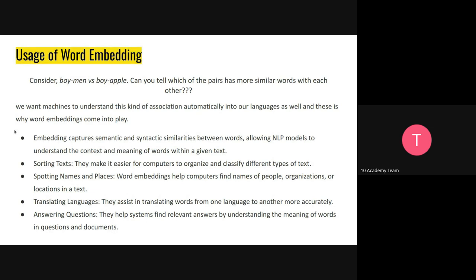Embeddings allow NLP models to understand the context and meaning of words within text. Other uses of embedding include: sorting text — making it easier for computers to organize and classify different types of text; spotting names and places — embeddings can help computers find names of people, organizations, and locations in text; translating languages — assisting in translating words from one language to another more accurately; and answering questions — helping systems find relevant answers by understanding the meaning of words in a question and document.